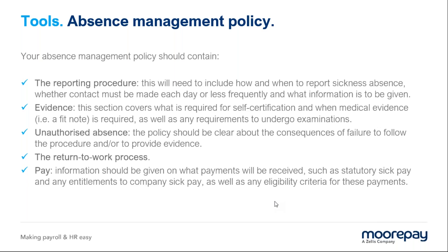In your absence management policy, typically found in your handbook, the reporting procedure will typically involve making a phone call to a line manager or the owner of the business. Simply sending a text or WhatsApp message is not enough. It's there for two reasons: first, it's far too easy just to drop a text. Second, and most importantly, you as a business owner or HR manager need to find out exactly what's going on - have they broken their ankle or had a dodgy curry last night? Contacting you directly by voice so you can ask questions is the first thing.